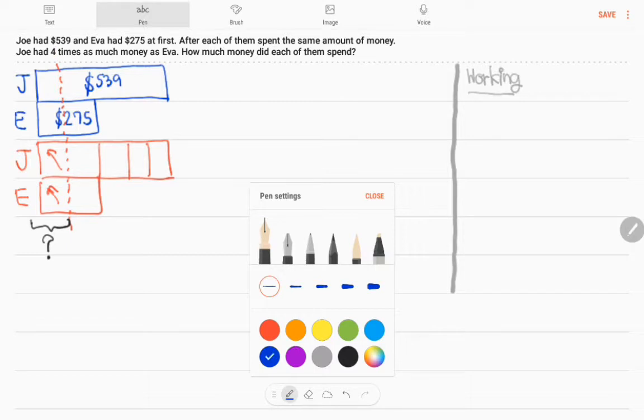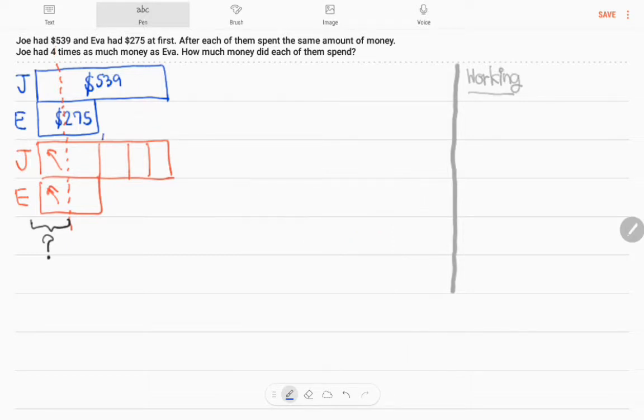So, can you see the two units? We can know because $539 minus $275 equals three units in here. That will give us $264.